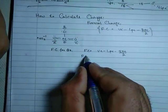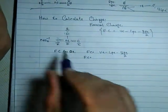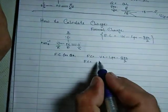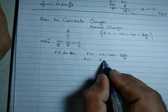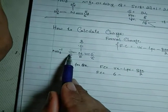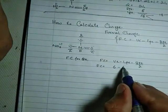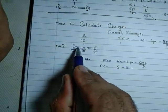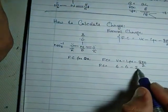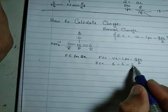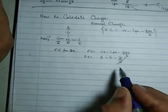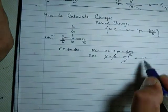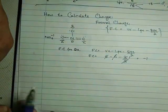For oxygen A, the valence electrons are 6, minus lone pair electrons 6, minus bond pair electrons, which are 2, divided by 2. That gives us 6 minus 6 minus 1 equals minus 1.